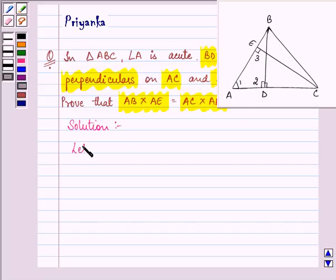So let angle BAC, that is angle A, be equal to angle 1. Angle BDA be angle 2, and angle CEA be angle 3.